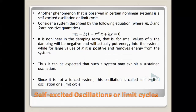A limit cycle is a self-sustained, self-excited oscillation. When a particular frequency input is given, the output oscillation is self-excited — not a forced input oscillation. The limit cycle output has a fixed frequency and moves in a periodic manner, not like a sinusoidal pattern.